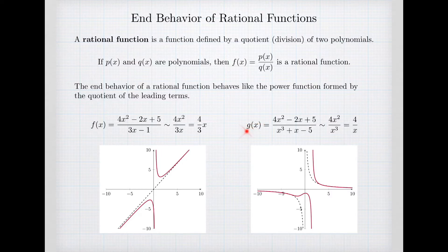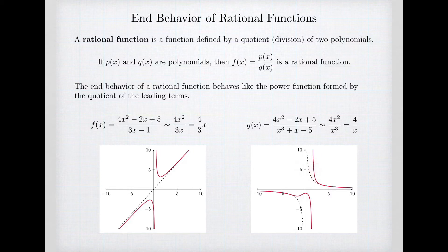I've defined a second function g of x that has the same numerator, but this time it's a cubic in the denominator with leading term x cubed. When I calculate the ratio of the leading terms — 4x squared over x cubed — that simplifies to 4 over x. Here's the graph of g of x. Again, there's a vertical asymptote, and the dashed curve showing the asymptotic curve 4 over x.